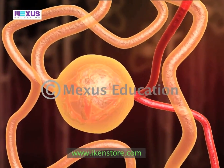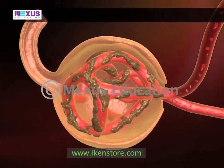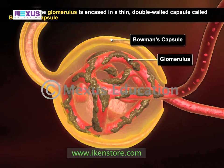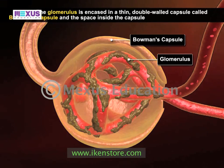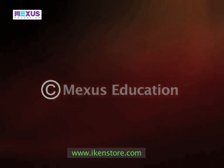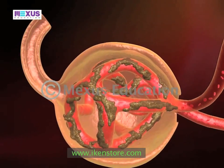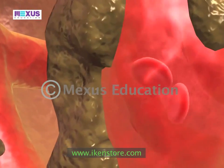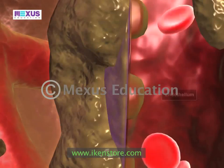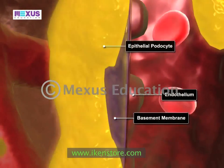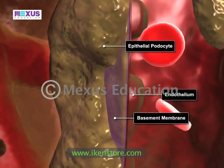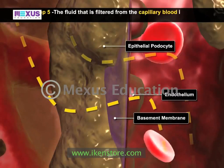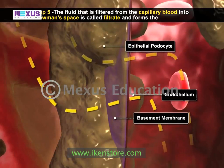The glomerulus is a unique high-pressure mass of capillaries that filters the blood. It is encased in a thin double-walled capsule called Bowman's capsule, and the space inside the capsule surrounding the glomerulus is called Bowman's space. Plasma-like fluid is filtered from the capillary blood into Bowman's space through the glomerular filtration membrane, which consists of three layers: the endothelium, the basement membrane, and the epithelial podocytes. The fluid filtered into Bowman's space is called filtrate and forms the primary urine.